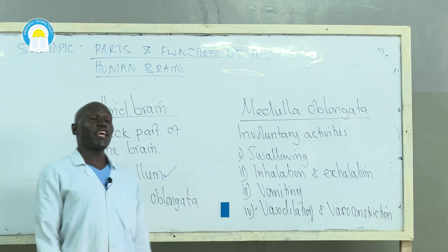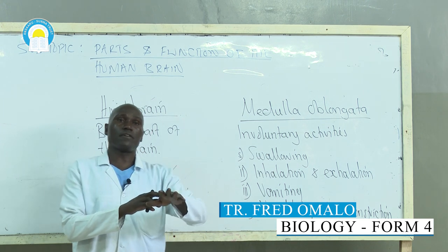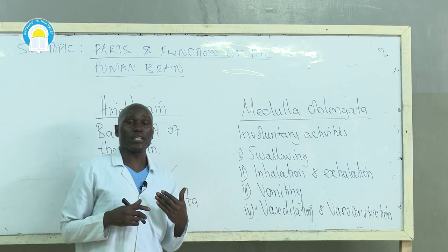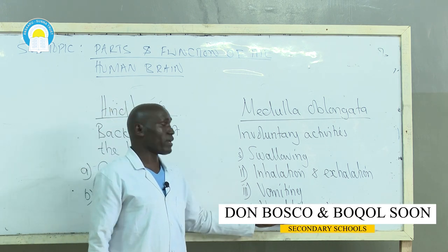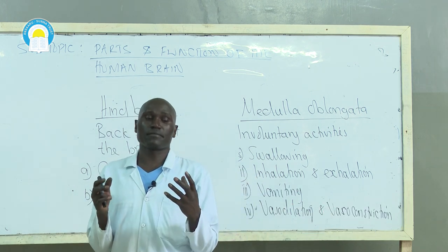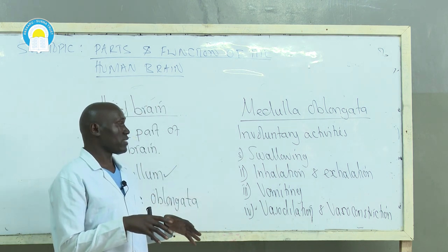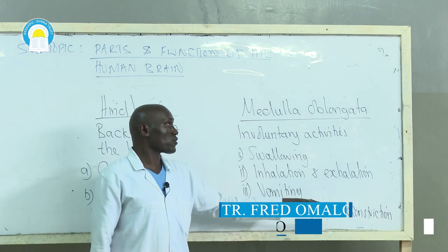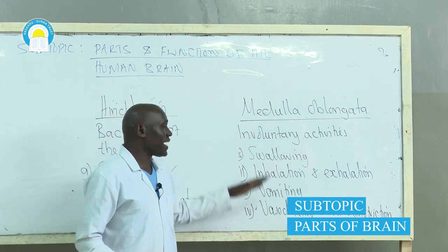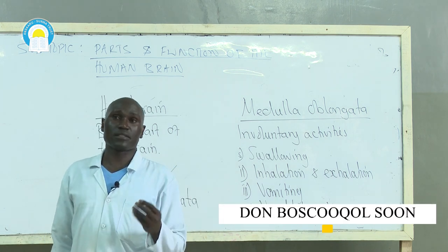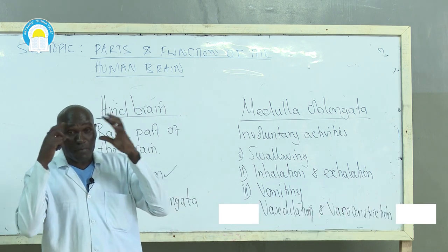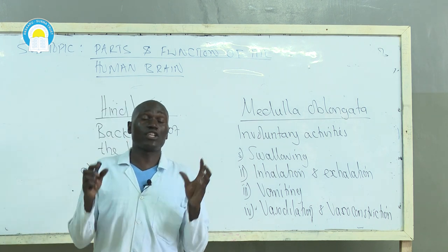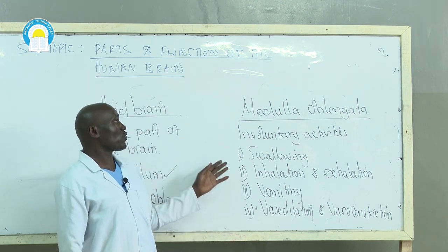Vasodilation and vasoconstriction are also controlled by medulla oblongata. In hot weather, peripheral blood vessels in the skin expand and come close to the surface, helping to lose excessive heat to the environment. In cold weather, vasoconstriction causes blood vessels to contract and move deep into the skin, minimizing heat loss. Dilation and constriction of the pupil of the eye in response to dim or bright light are also controlled by medulla oblongata.